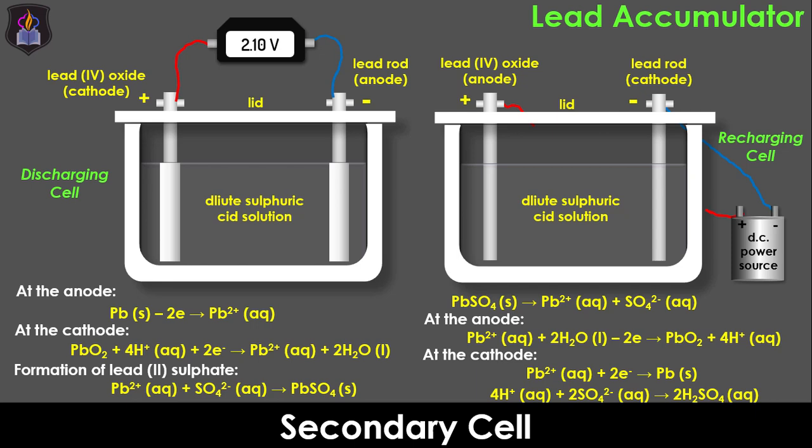After a while, the density of the acid increases to its initial value of about 1.25 grams per cm3 due to the release of hydrogen and sulfate ions into the solution, while the cell EMF returns to the initial value of about 2.1 volts. At this point, we see the battery is fully charged.